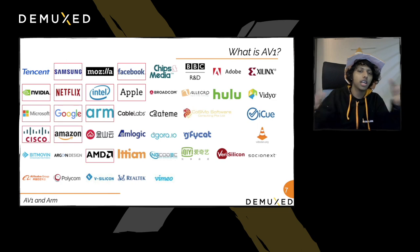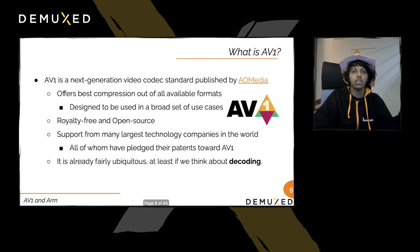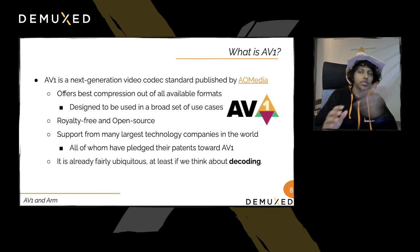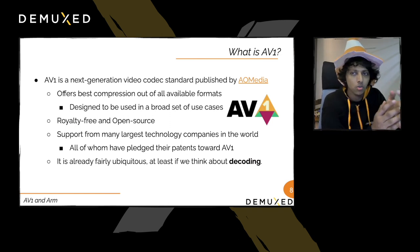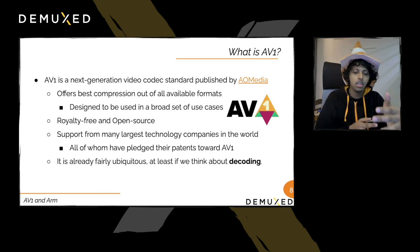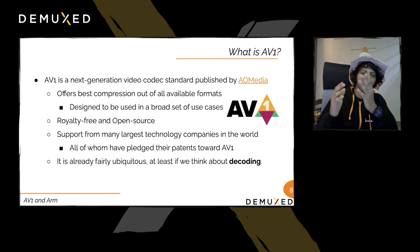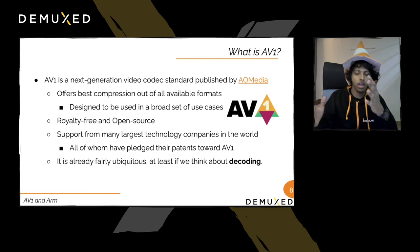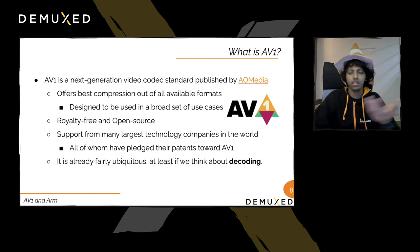The Alliance currently has around 43 members, including some open-source organizations. They are all pledged toward making AV1 the best codec available. It's fairly production-ready for decoding at scale — that's the current state of AV1 decoding.